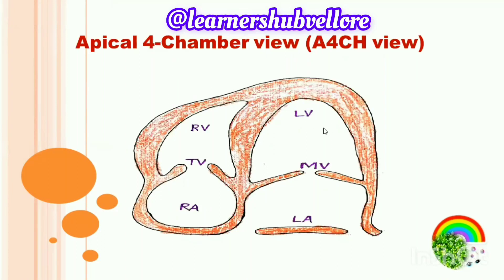Coming to the apical four-chamber view, here we can see the right ventricle, tricuspid valve, right atrium, left ventricle, mitral valve, and left atrium.